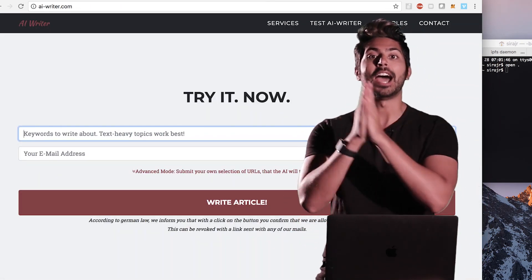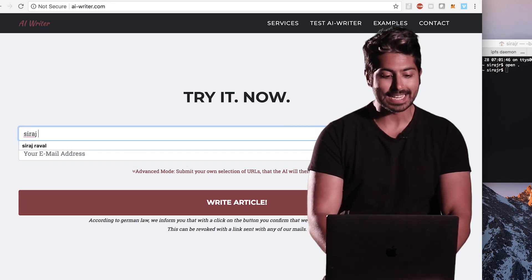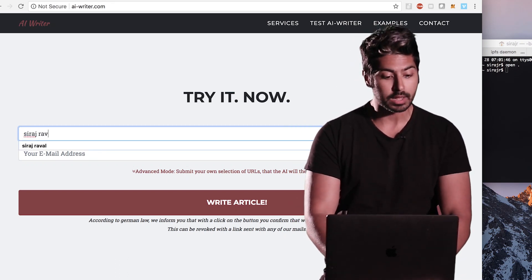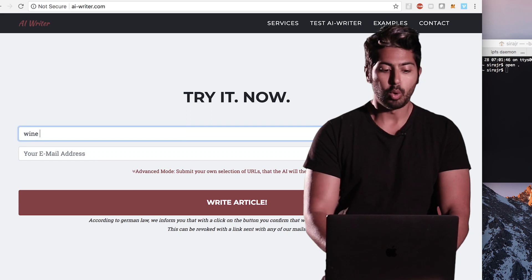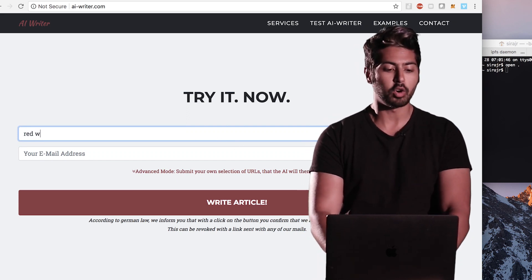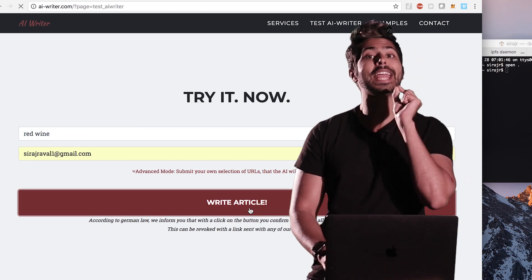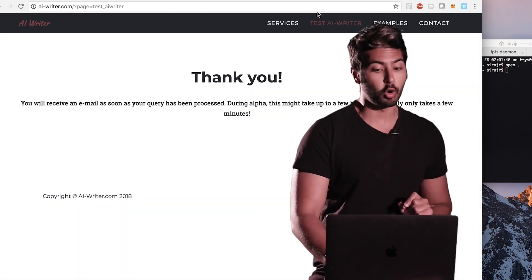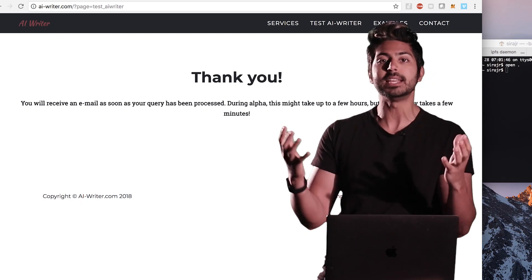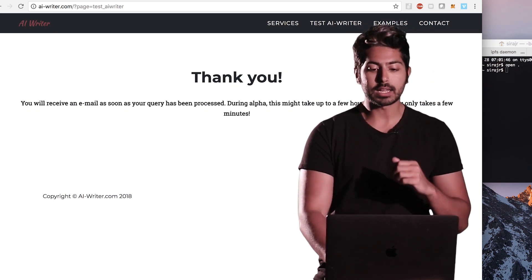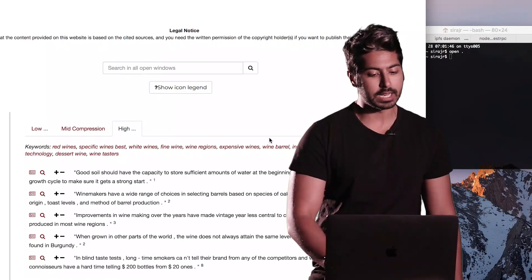And what this is, is an AI writer. What it does is it takes in as input a keyword. In my case, I'll say it's going to be wine. So I want to write an article about red wine. I'm going to send it to my email address. It's going to use an AI to then generate an article based on that. It might take a few minutes. It might take a few hours. But luckily, I already have the output right here for us.